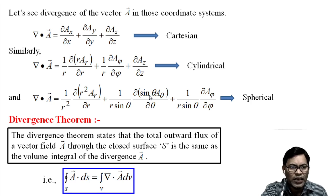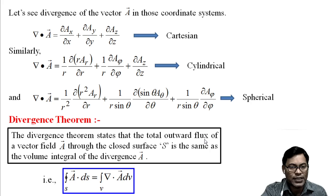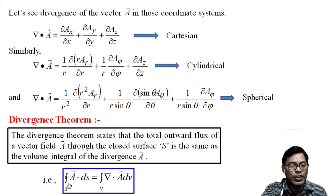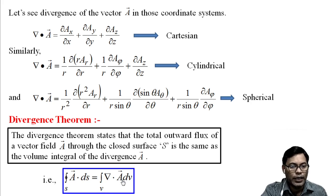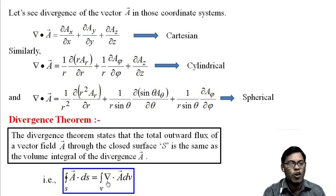The divergence theorem is very important. It relates the surface integral to the volume integral, stating that the total outward flux through a closed surface s equals the volume integral of the divergence: ∮s a·ds = ∫v (del·a) dv. This is the mathematical representation of the divergence theorem.